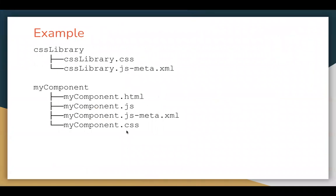The idea behind this demonstration is I will be creating a component named CSS library. In this component, I will be having two files: csslibrary.css and csslibrary.meta.xml. This component will only be having the CSS implemented. Remember, whenever you want to share CSS of a component in form of a library to other components, you don't need to implement .html and .js files. If they are available, you just need to delete those. Otherwise, your sharing of CSS won't be working fine.